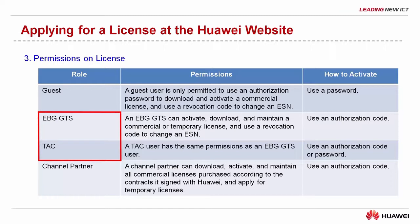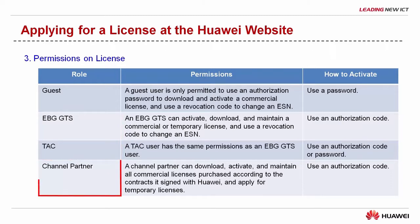An EBG, GTS, and TAC user can activate, download, and maintain a commercial or temporary license and use a revocation code to change an ESN. A channel partner can download, activate, and maintain all commercial licenses purchased according to the contracts it signed with Huawei, and apply for temporary licenses.